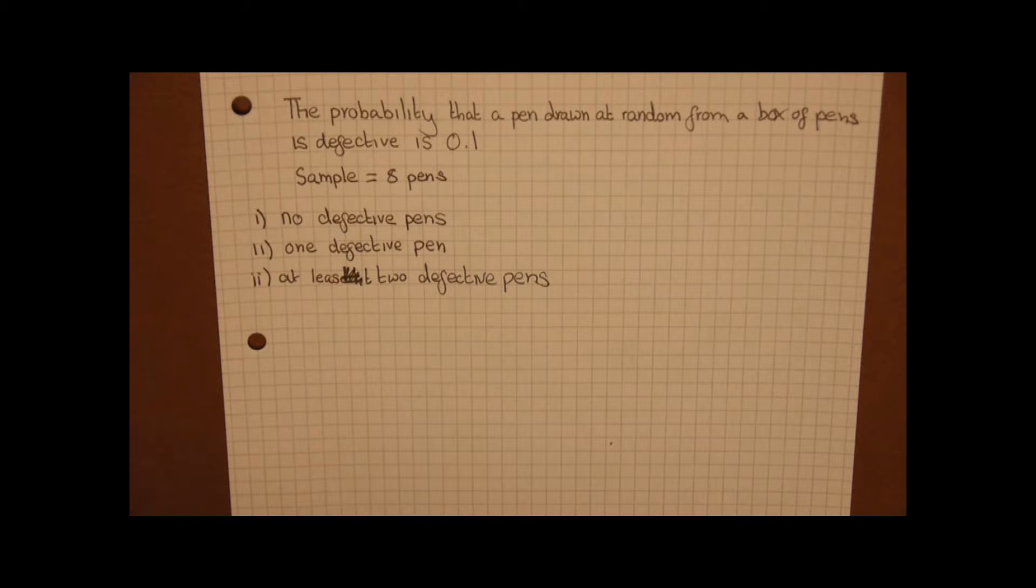The probability that a pen drawn at random from a box of pens is defective is 0.1. The sample is 8 pens. The first part is find the probability of no defective pens, the second part is one defective pen, and the third part is at least two defective pens.